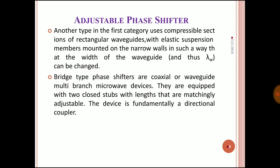This waveguide width-change approach provides phase shifting. In a bridge-type phase shifter, it could be coaxial or waveguide multi-branch microwave devices, equipped with two closed stubs with lenses that are matchingly adjustable. The device is fundamentally a directional coupler, where by changing the position of the stub, we can change the phase shift. A directional coupler is a well-known basic example of this.